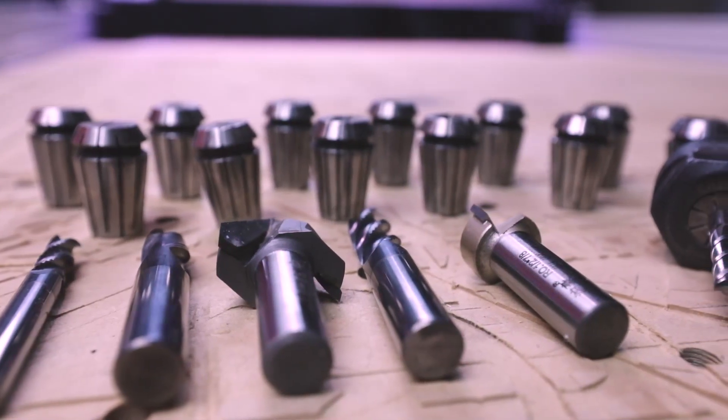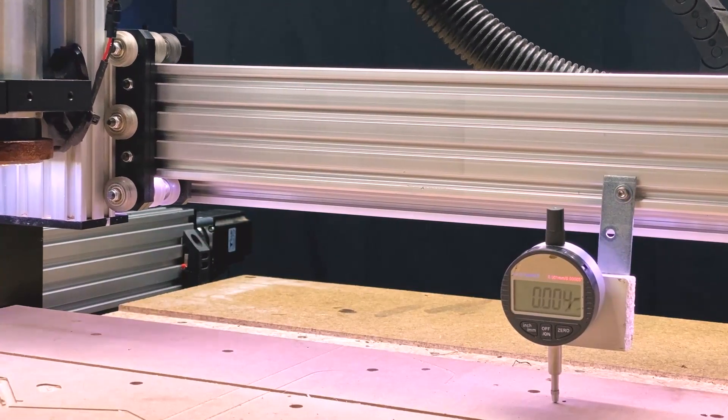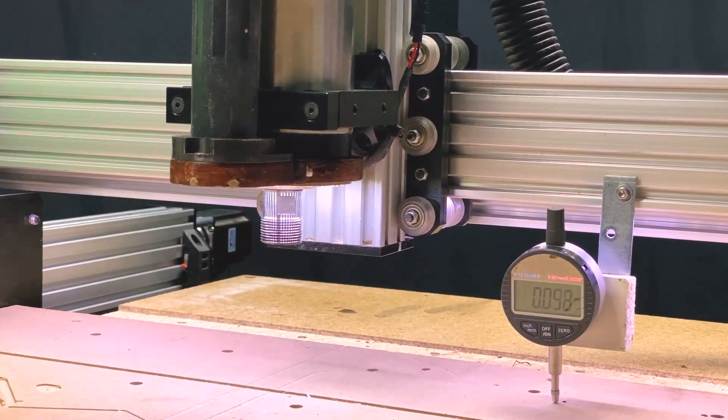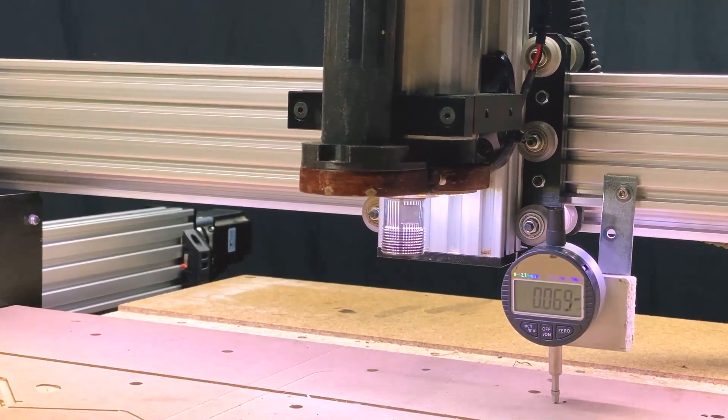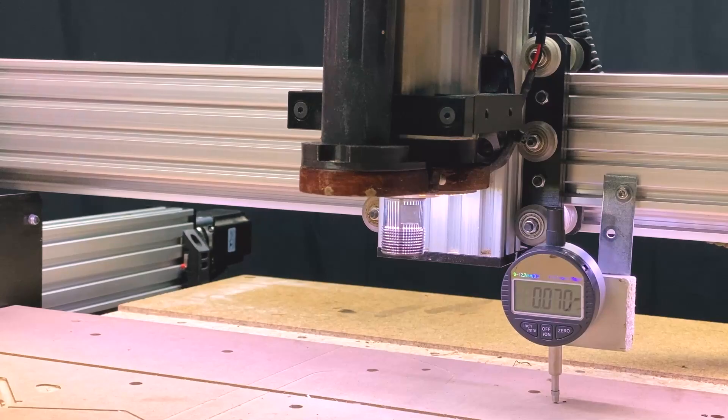So one of the issues that I did read online was that the 2.2 kilowatt system is quite heavy and what happens is because it's made out of aluminum for the X-rail there it has a bit of a bow. But you can see it only hits 0.07 of a millimeter and really that's half a width of a piece of paper.